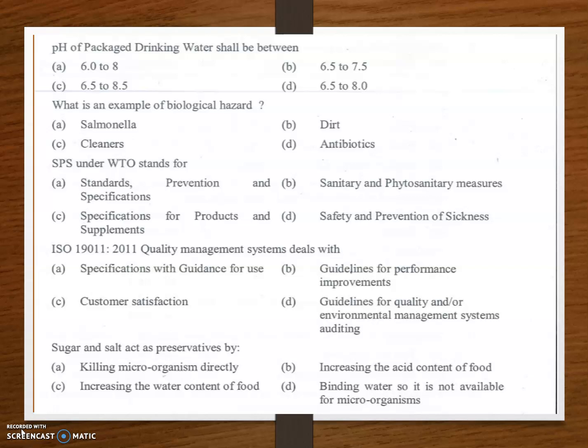ISO 19011:2011 quality management deals with — the answer is option D: guidelines for quality and/or environmental management systems auditing.